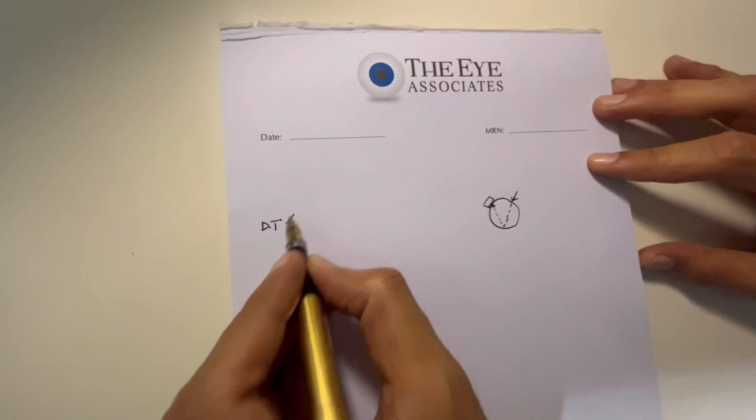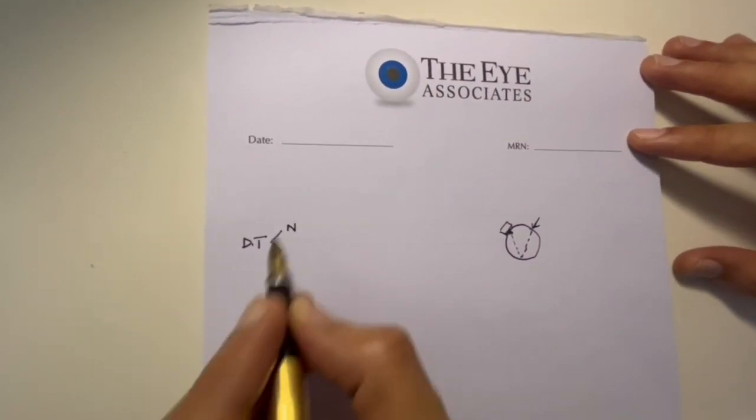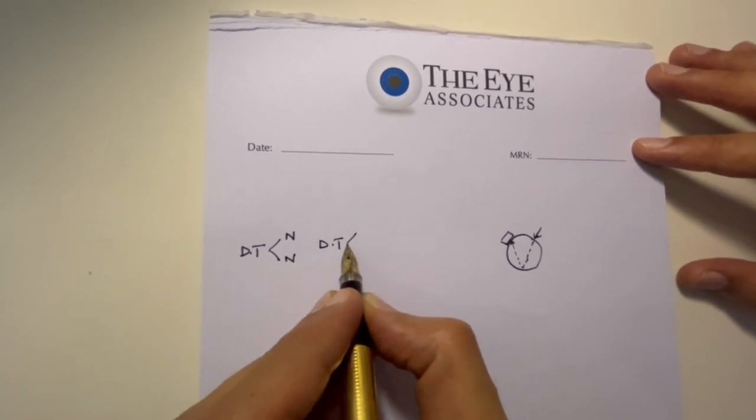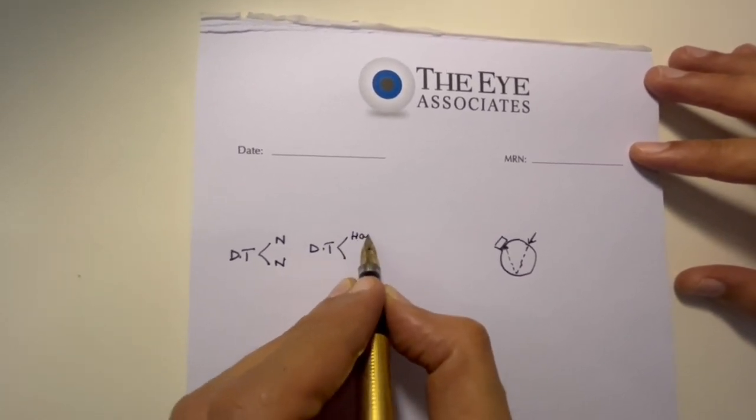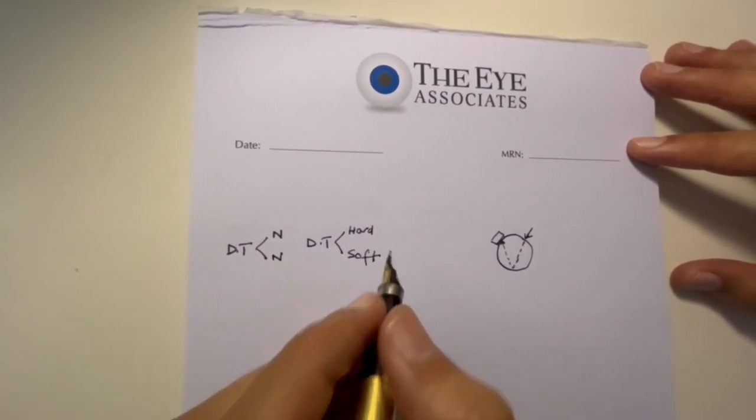So to document this, we will write digital tonometry. What I felt is normal, I would write normal, or digital tonometry as hard or as soft based on what I feel.